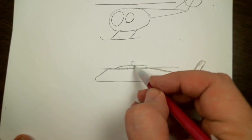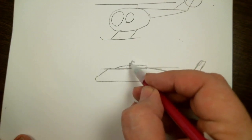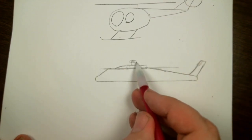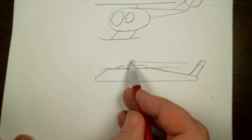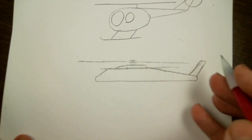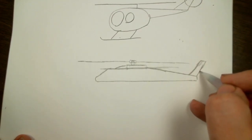And then we're going to put a kind of a box here. And another box. And make a rotor blades. Then over here we're going to make a circle for our tail rotor.